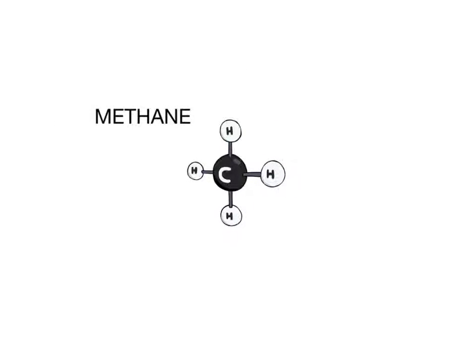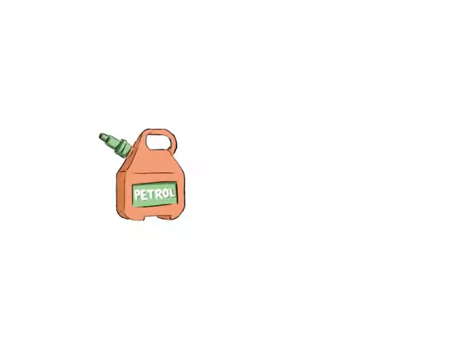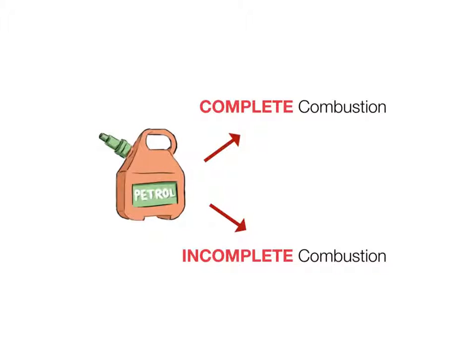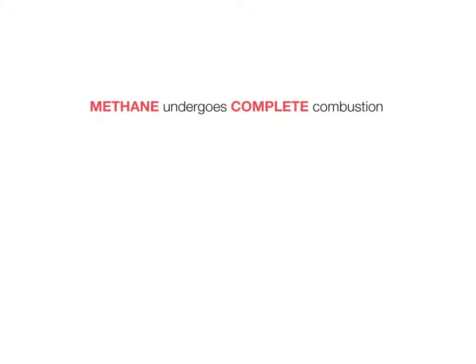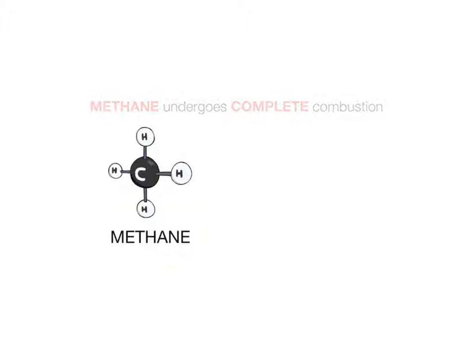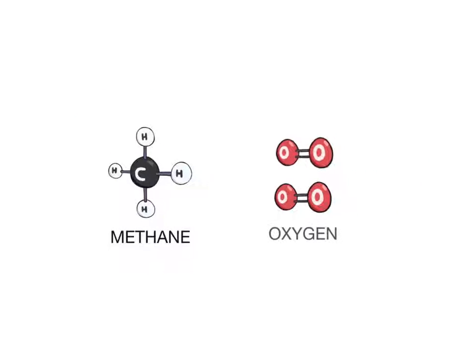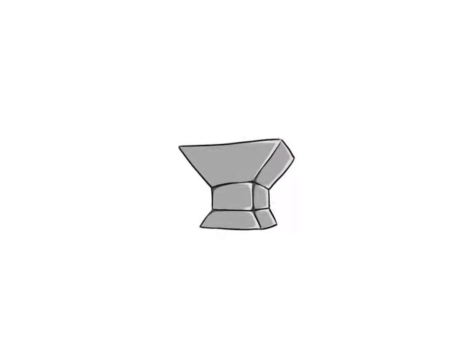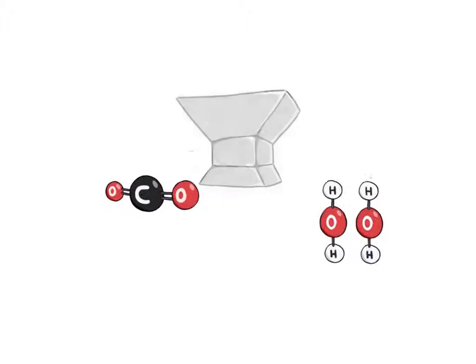Methane, like other hydrocarbon fuels such as petrol, can undergo either complete or incomplete combustion. When methane undergoes complete combustion, that is in a plentiful supply of air, it produces carbon dioxide and water, as shown by the equation.